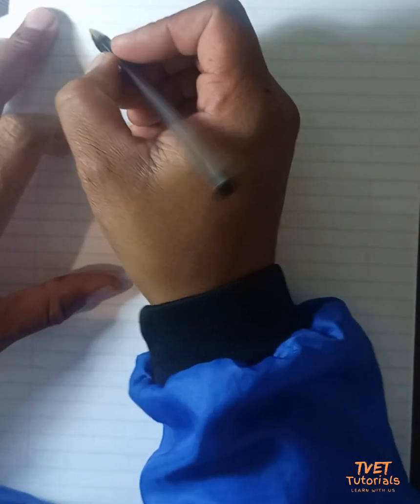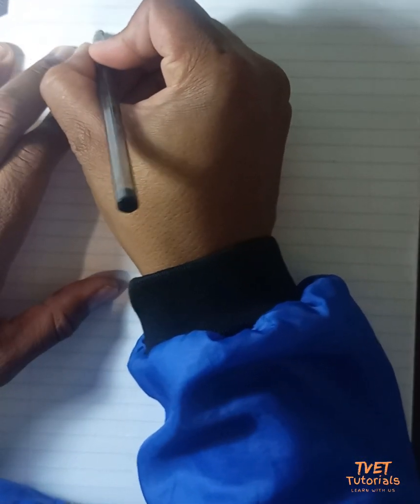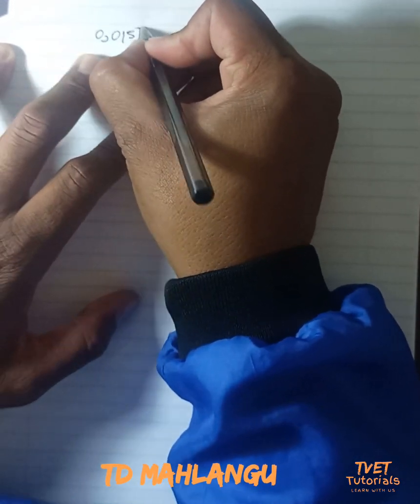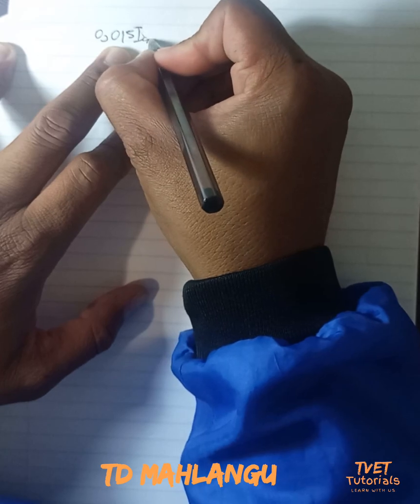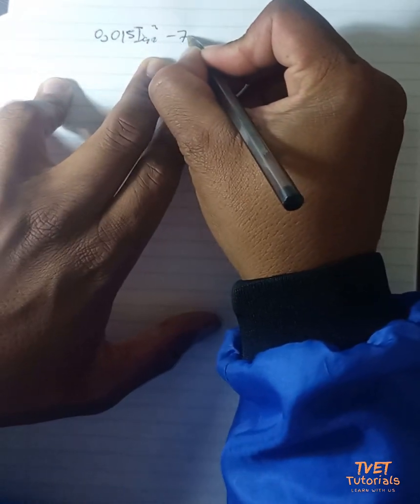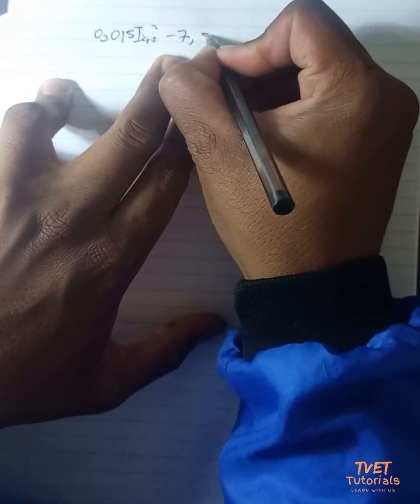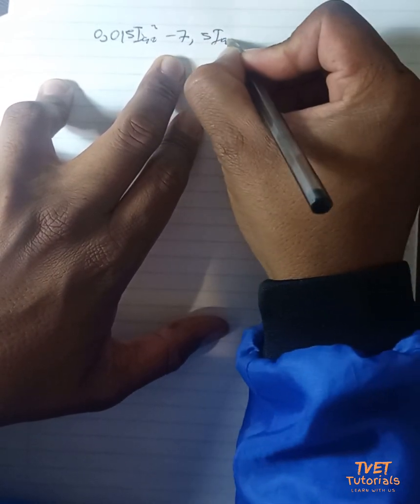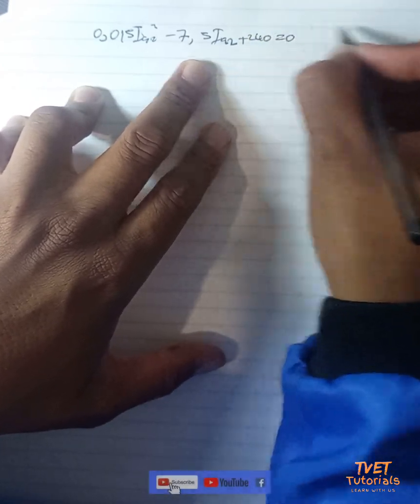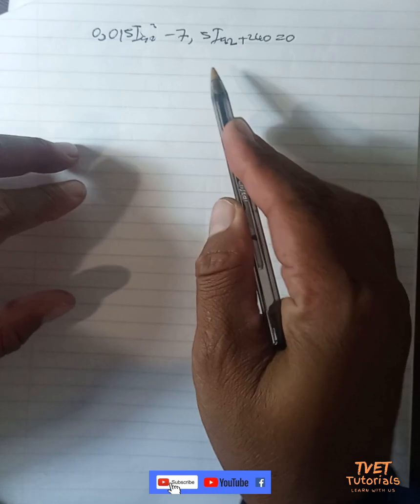Right, so let's continue with that question. We ended up in this situation where we had 0.015 I_a2 squared minus 7.5 I_a2 plus 240 is equal to 0, which is clearly a quadratic equation.